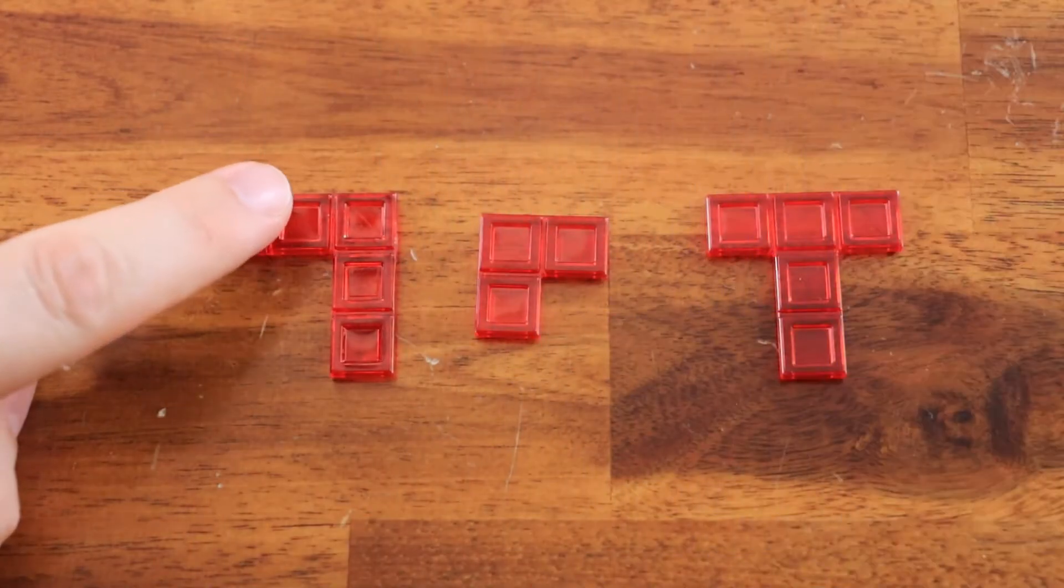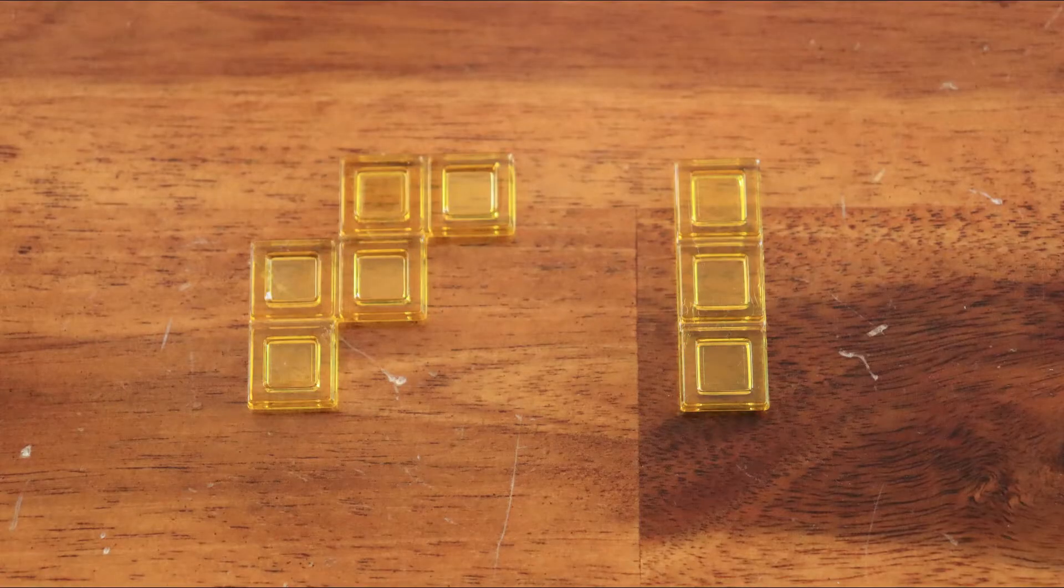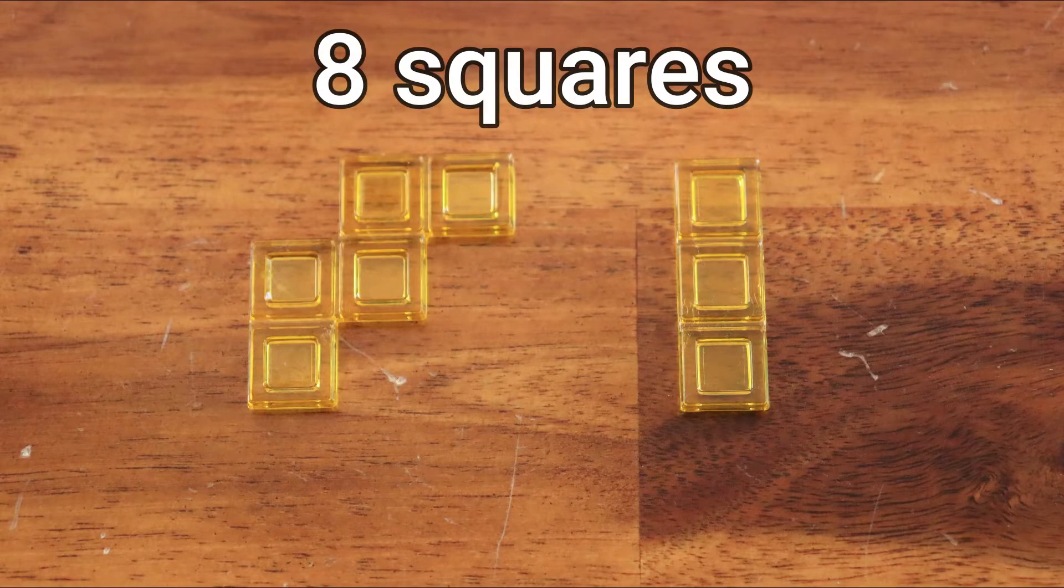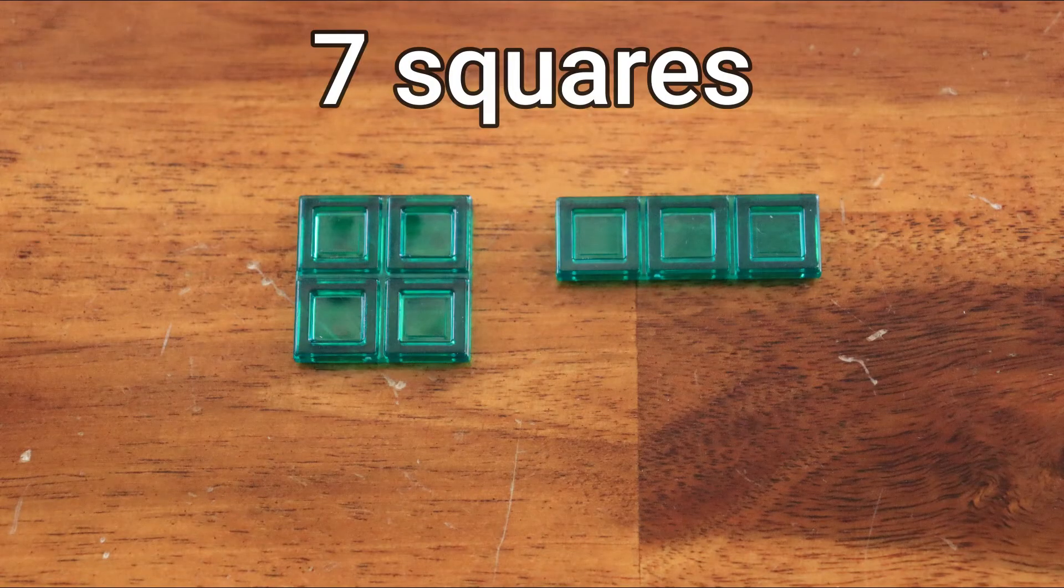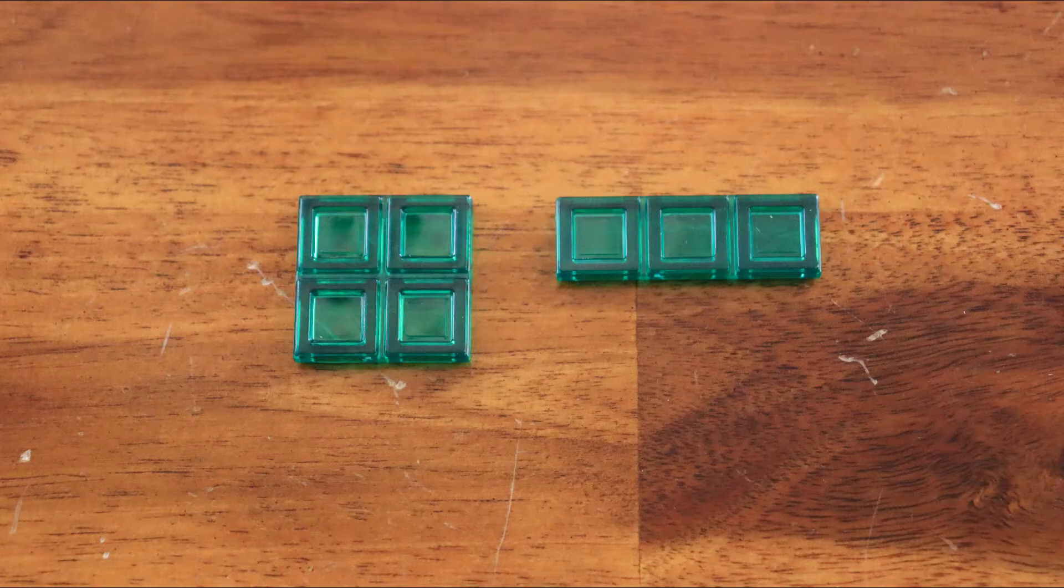Then, each player counts the number of squares on their unplayed pieces. For example, the yellow player has two pieces left, totalizing eight squares, while the green player has two pieces totalizing seven squares. The player with the lowest number of squares wins.